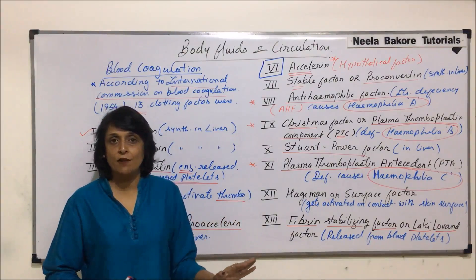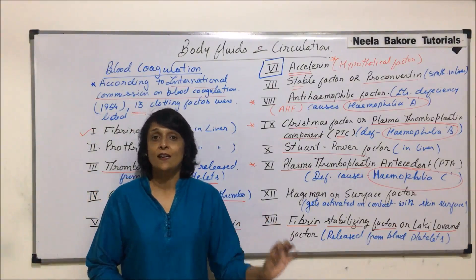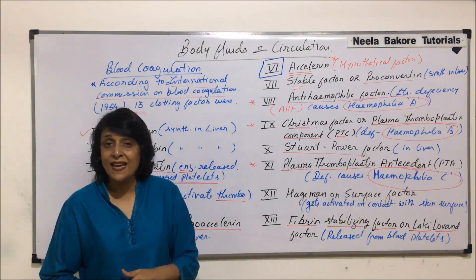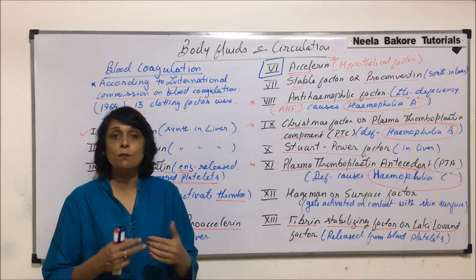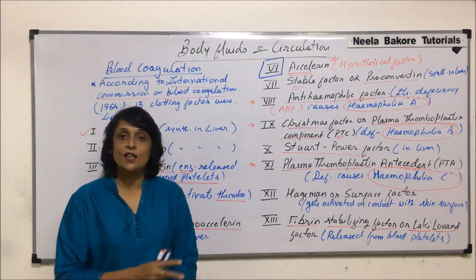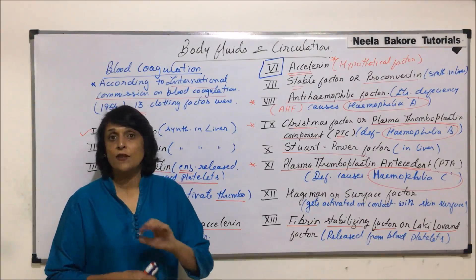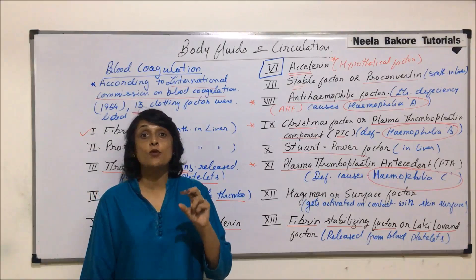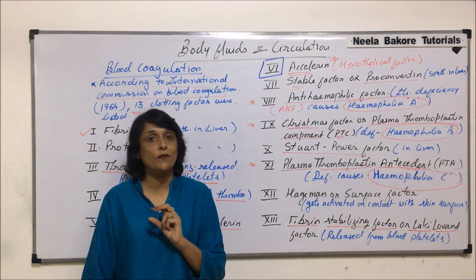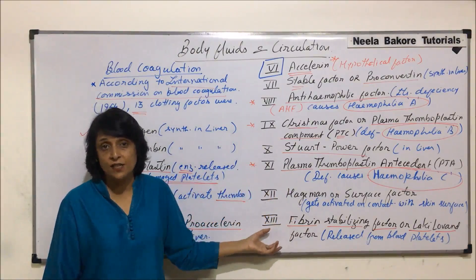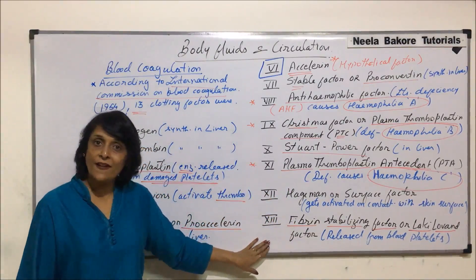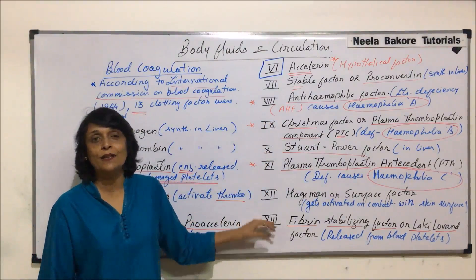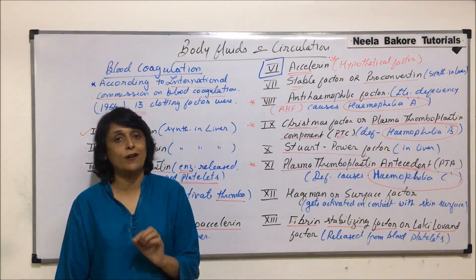These 13 clotting factors start working whenever there is an injury to the platelets; otherwise they keep circulating in the blood without causing any change. This is our natural defense — blood clotting should occur only upon injury to stop bleeding. If clotting occurs inside blood vessels, it would block the passage of blood and result in serious complications.